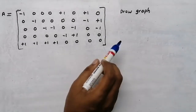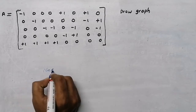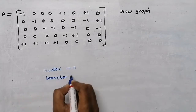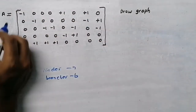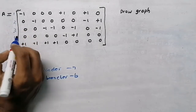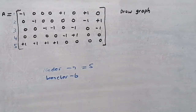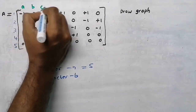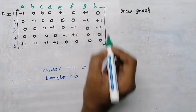In this video we need to draw a graph from the incidence matrix. The first step is to identify the nodes and branches. As we know, in the incidence matrix nodes are written here and branches are written here. I will write nodes 1, 2, 3, 4 and 5, so there are 5 nodes. Now I am going to name the branches as a, b, c, d, e, f, g, h.